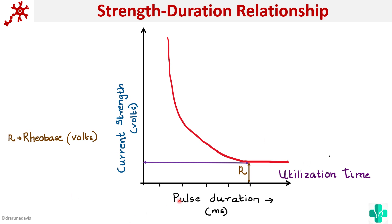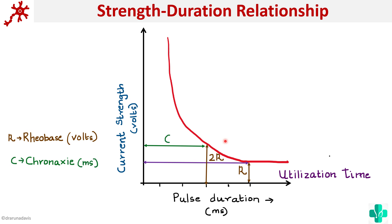So what is chronaxi? Chronaxi is the time required to produce a stimulus for a current strength double the reobase. Suppose we are giving a current strength which is double that of reobase — that is why it is depicted as 2R. If the current strength is double the reobase, the minimum duration for which you have to give that stimulus is what is meant by chronaxi. So reobase is the minimum current required to produce a stimulus, and chronaxi is the minimum time required when a current of twice the reobase is applied.